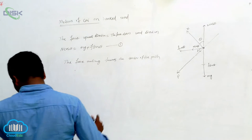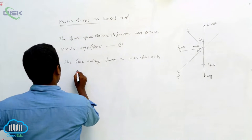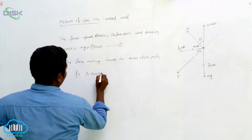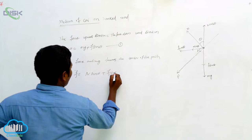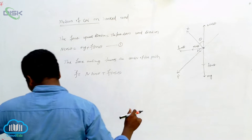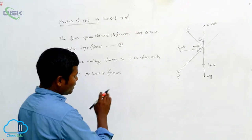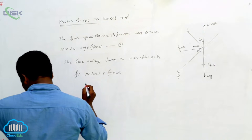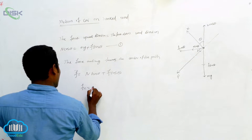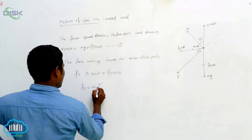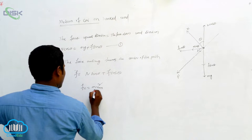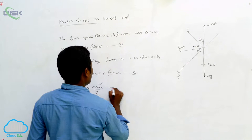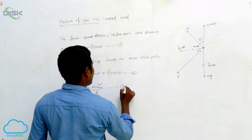For the centripetal direction, small f is equal to N sin theta plus f cos theta. This is equation number two. The centripetal force Fc is equal to m v-squared max divided by r. This is equation number three.